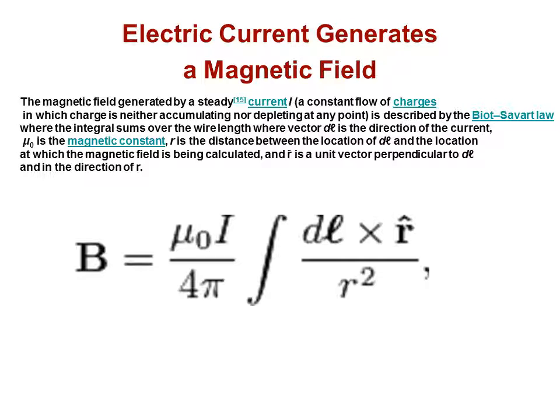This is rather involved, but for those of you who have a little bit of higher mathematics, I guess it's really something that you can appreciate. The magnetic field generated by a steady current I, a constant flow of charges in which charge is neither accumulating or depleting at any point, is described by the Biot-Savart law where the integral sums over the wire length where vector DL is the direction of the current.